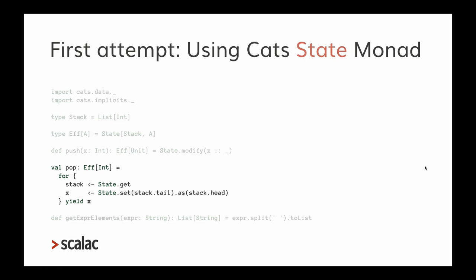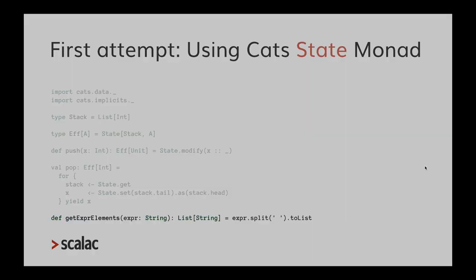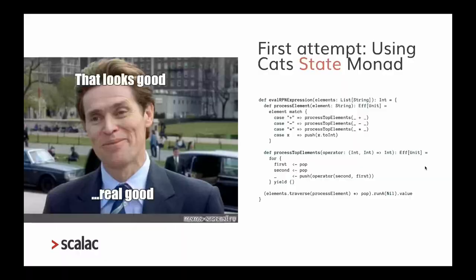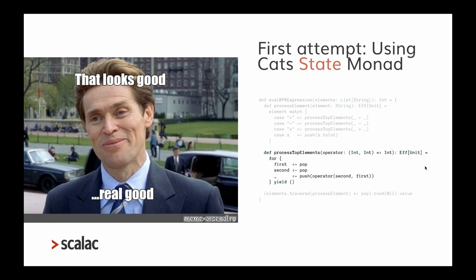Here is the core solution. My evalRPExpression method takes a list of elements and processes each one: if an element is a number, it pushes it onto the stack; if it's an operator, it pops two elements, applies the operation, and pushes the result back. I then traverse the list with this processElement function and pop the final result.